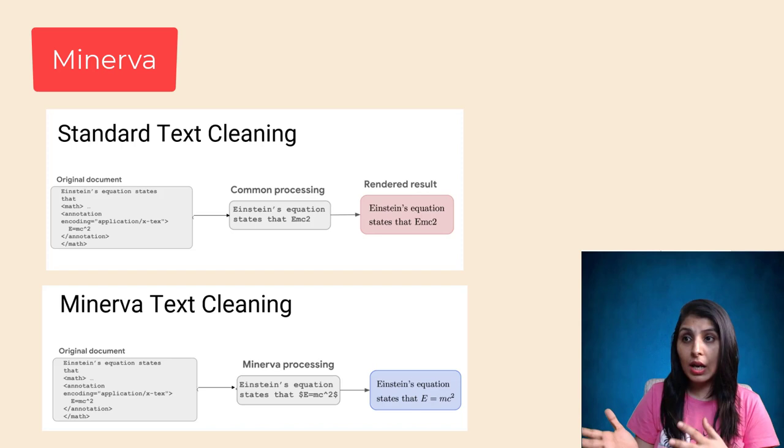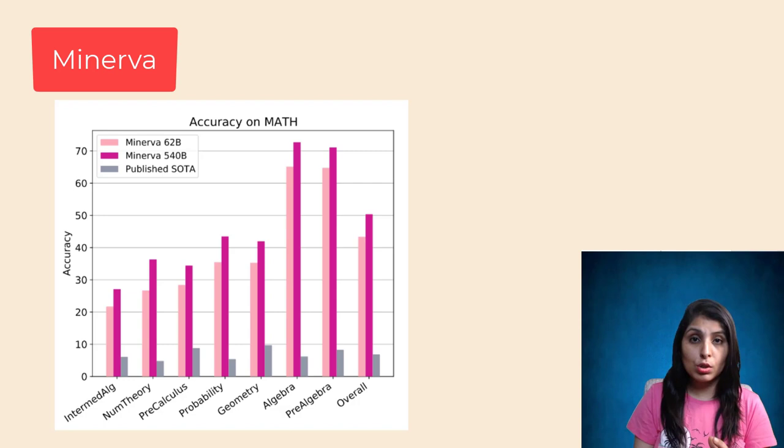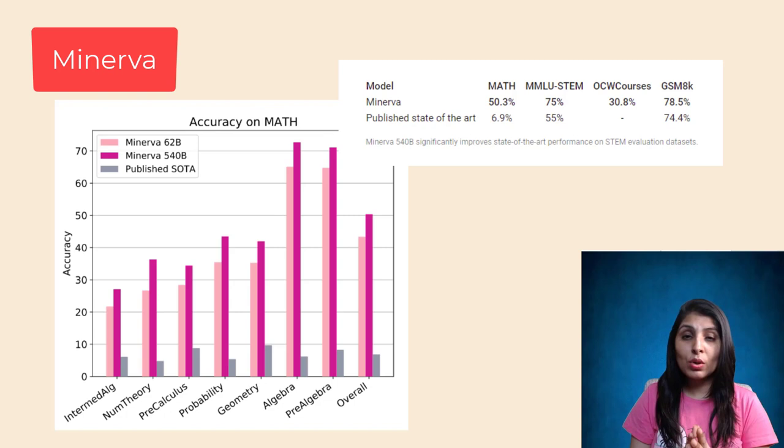After the researchers trained the model on these technical and mathematical papers, Minerva gave 50.3% accuracy on math, which was previously 6.9%. The model accuracy rose from 6.9% to 50.3%.